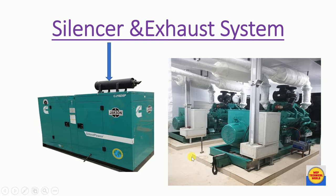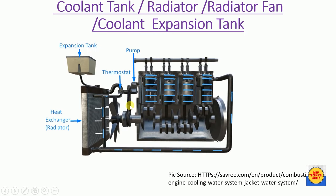Next is the cooling system of the DG. It consists of a coolant expansion tank, a heat exchanger (radiator), a thermostatic valve, a coolant pump, and a radiator fan driven by the crankshaft of the engine. The cooling system maintains the engine temperature at 80 degrees Celsius.